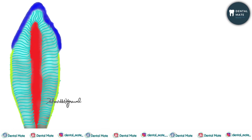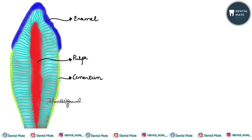This is a diagrammatic representation of an interior tooth. The outermost layer covering the crown portion is enamel. The innermost layer is the pulp, which is present both in the crown and the root. The outermost portion covering the root is cementum. The remaining portion present between the enamel and pulp in the crown, and between the cementum and pulp in the root, is dentine.